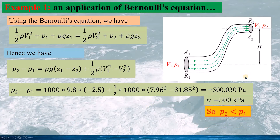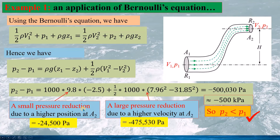From this calculation, P2 is smaller than P1. This seems understandable since P2 is at a higher position. According to Bernoulli's equation, the pressure reduction due to the higher position at A2 accounts for minus 24,500 Pa of the total pressure difference.